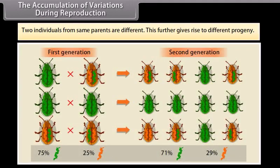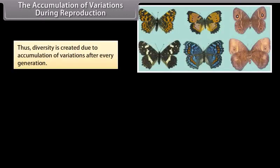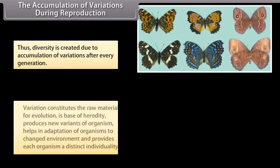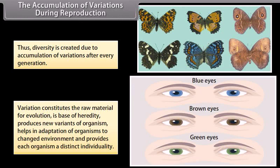Two individuals from same parents are different. This further gives rise to different progeny. Thus, diversity is created due to accumulation of variations after every generation. Variation constitutes the raw material for evolution, is base of heredity, produces new variants of organism, helps in adaptation of organisms to changed environment, and provides each organism a distinct individuality.